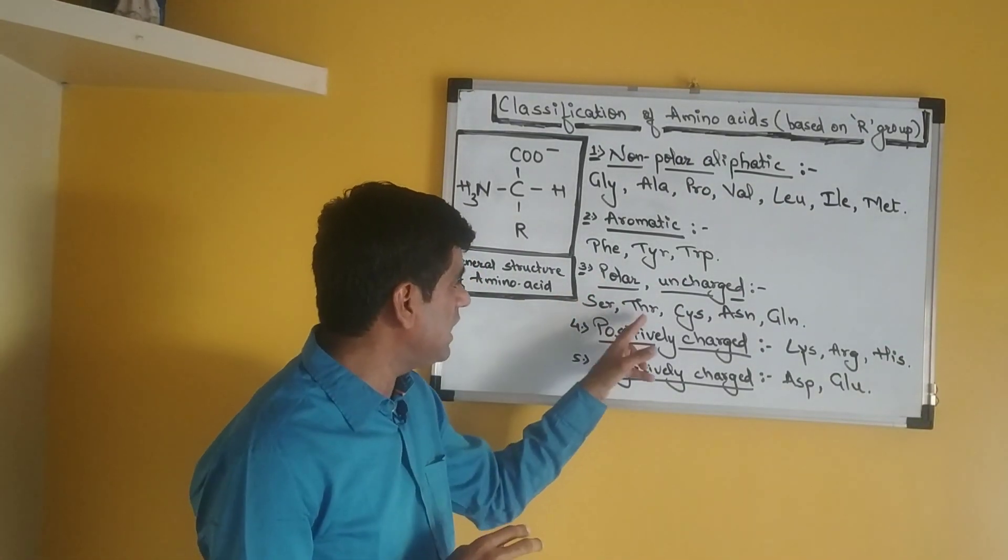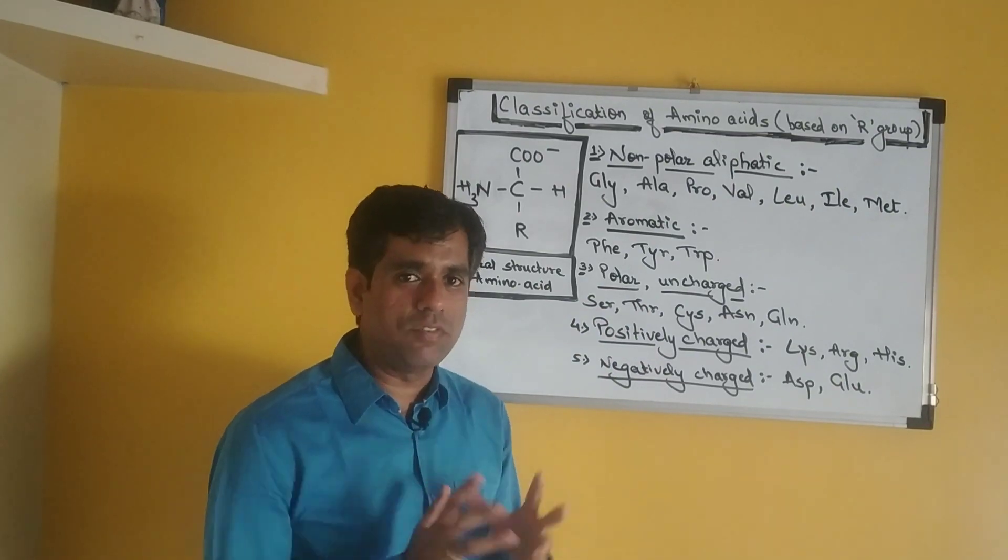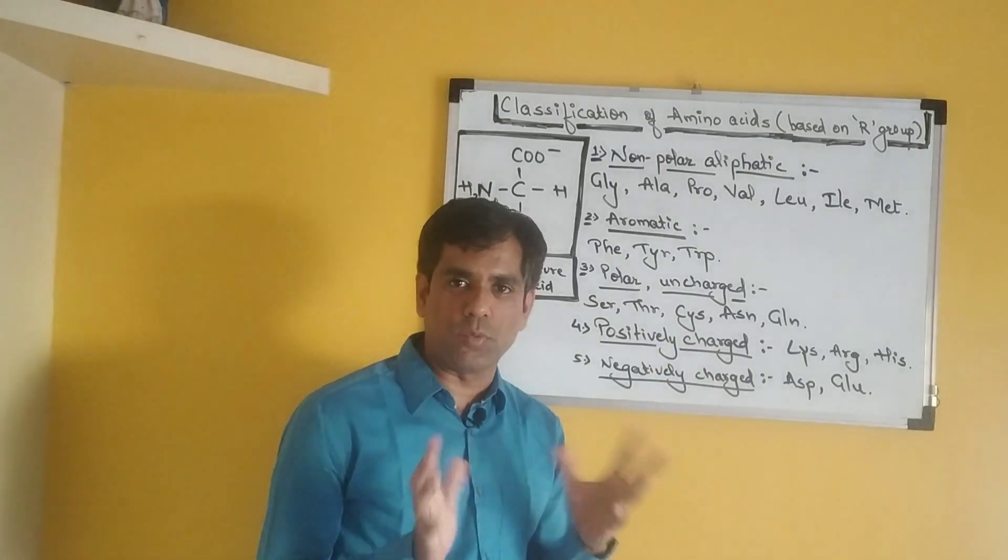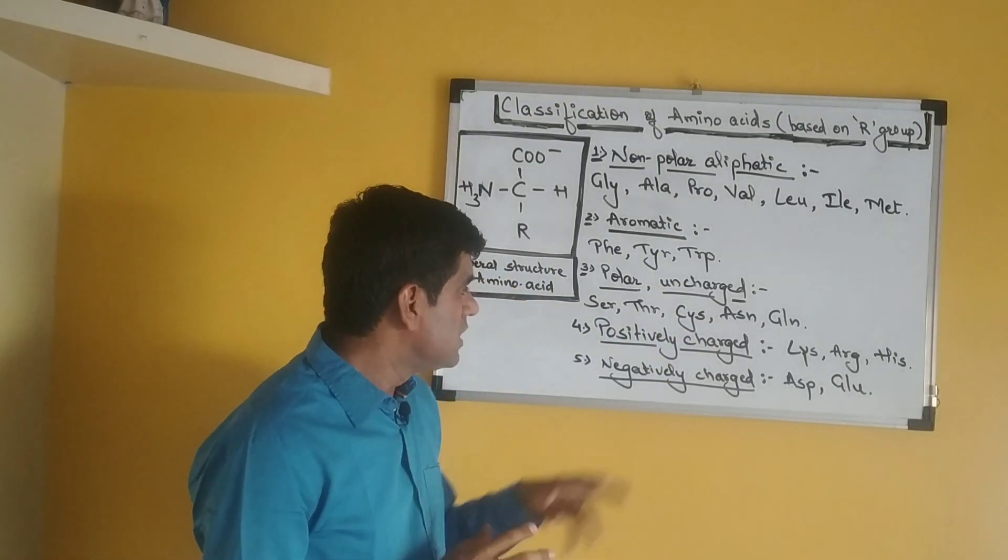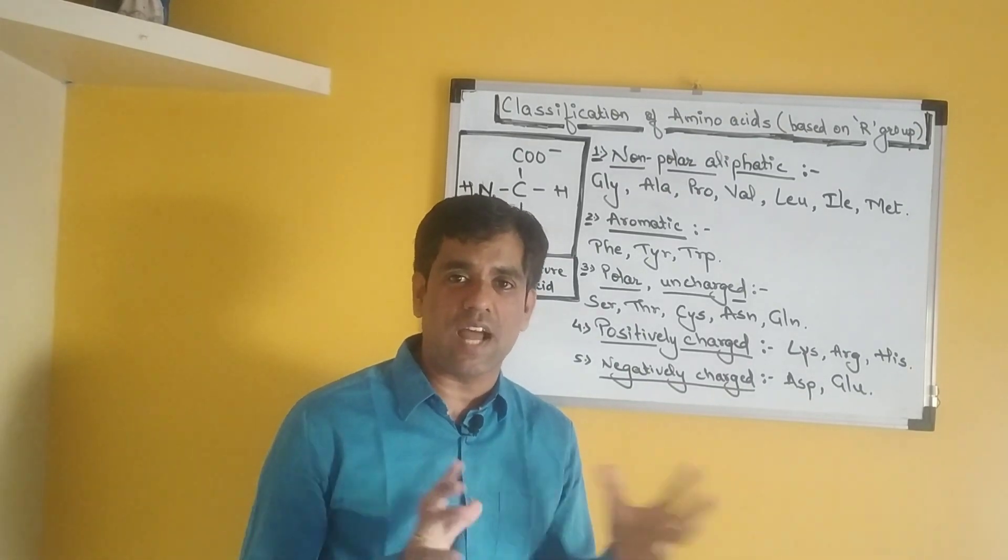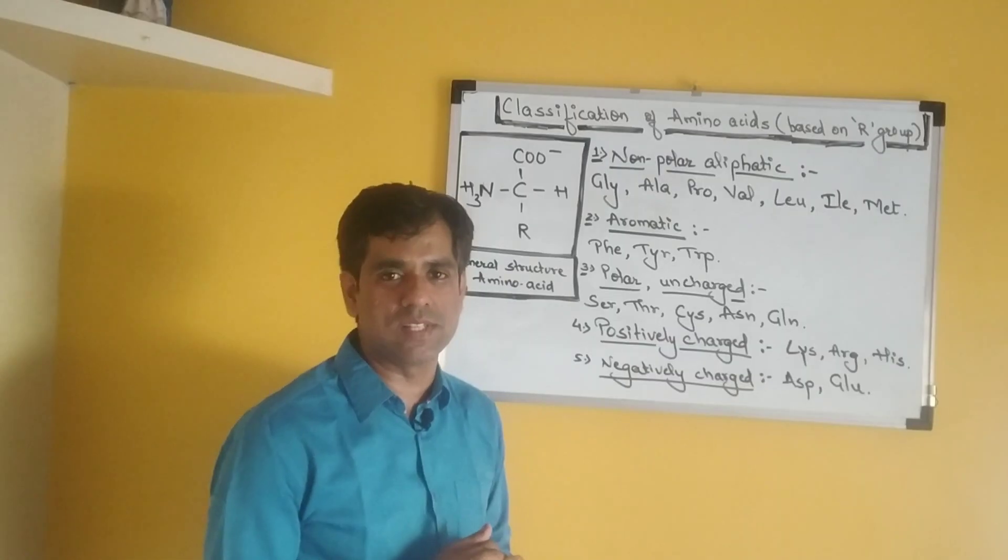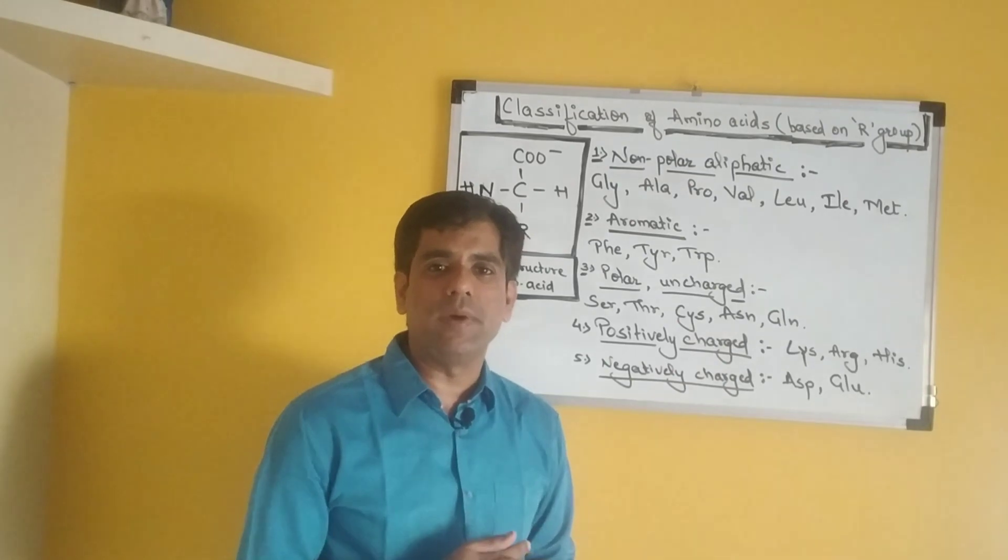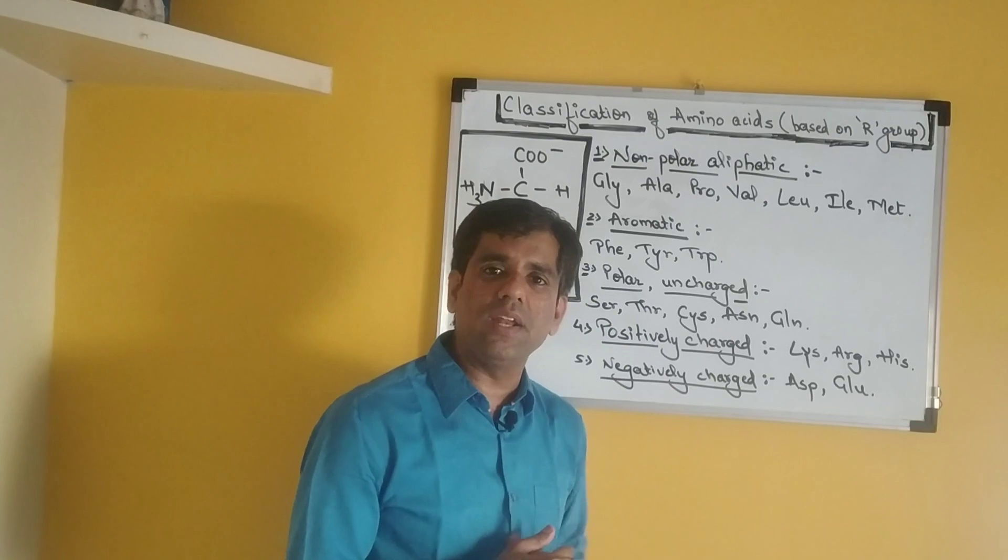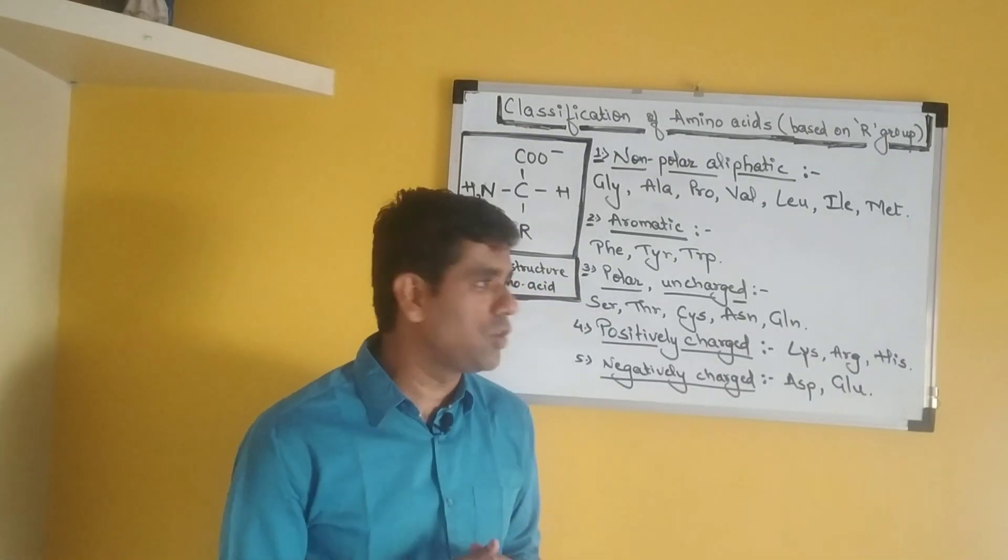You have in the list serine and threonine—the polarity of these amino acids is due to the hydroxyl groups. You have cysteine which has its polarity due to the sulfhydryl group. Cysteine is also famous because it is the amino acid involved in formation of disulfide bonds. They combine together to form a cystine kind of residue.